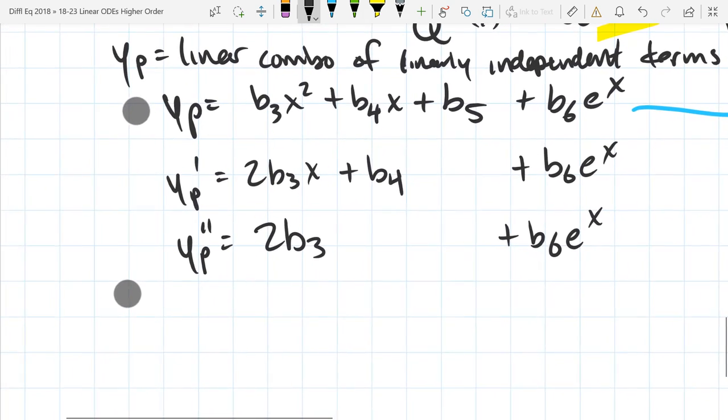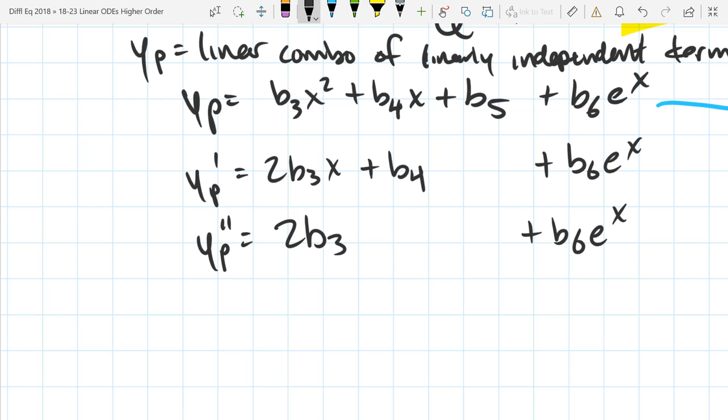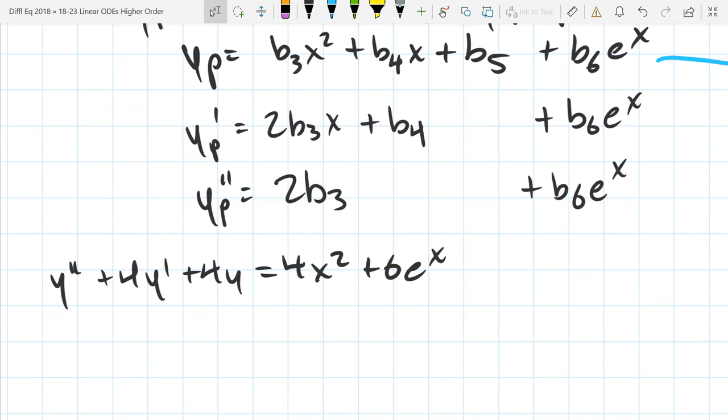So, I will rewrite the ODE right here so we can plug it in without scrolling up a bunch. We had Y double prime plus 4Y prime plus 4Y equals 4X squared plus 6E to the X. This is going to get pretty ugly before we figure out these constants. Do you remember matching coefficients from Calc 2? We're going to basically match coefficients. So, we're going to reorganize terms so that there should be a constant term, an X term, an X squared term, and an E to the X term total.